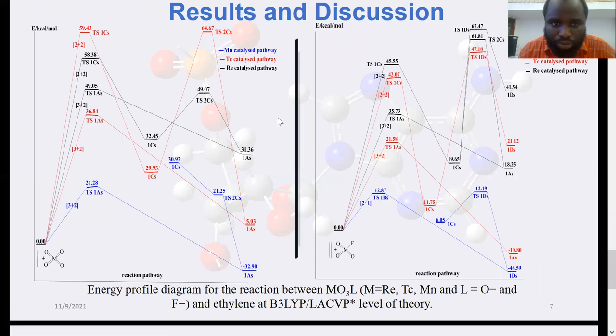These are the energy profiles to explain the energetics. The black lines represent the rhenium catalyzed pathway, the red lines represent the technetium, and the blue represents the MnO4. It is evident that for forming diols, the MnO4 is the most kinetically and thermodynamically favored pathway, because we are seeing the lowest activation barrier, which is a kinetic property, and also the lowest reaction energy, which is a thermodynamic property. In all cases, the 3+2 was favored over the 2+2.